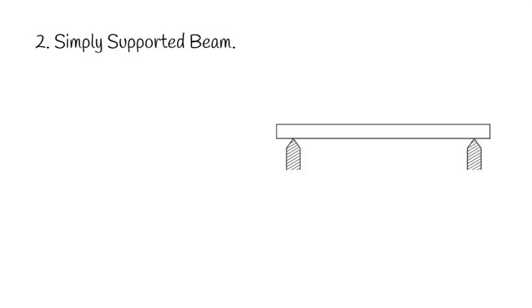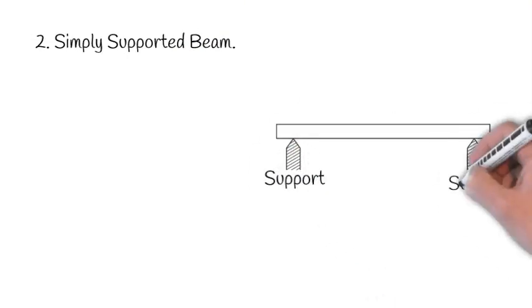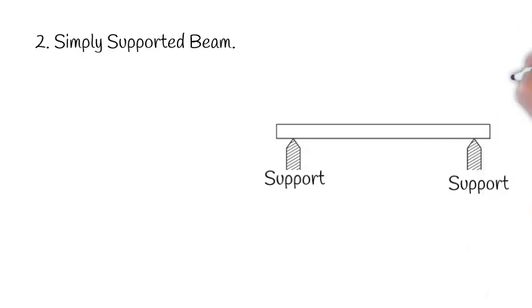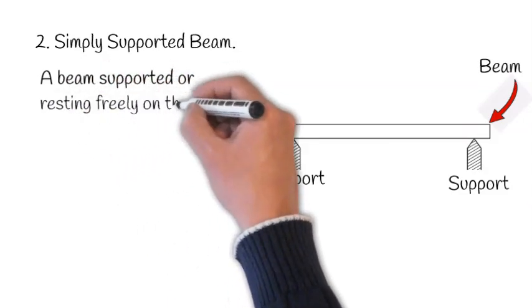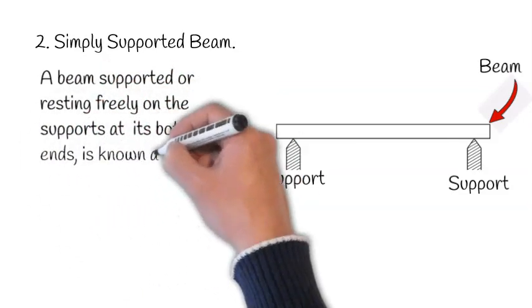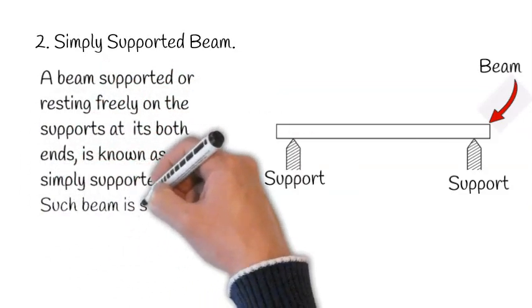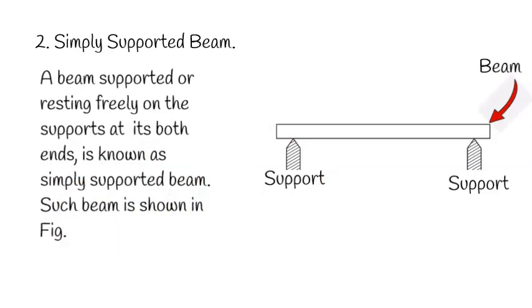2. Simply Supported Beam: This is the support and this is the beam. A beam supported or resting freely on the supports at its both ends is known as simply supported beam. Such beam is shown in figure.